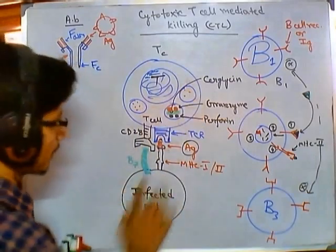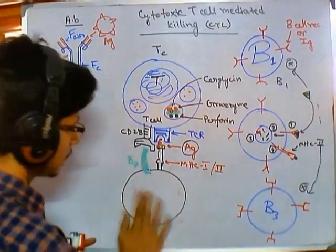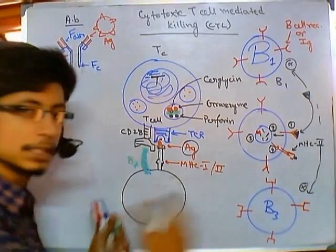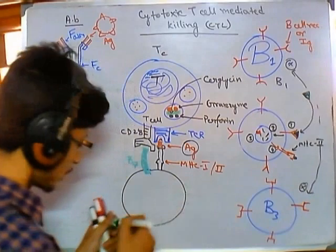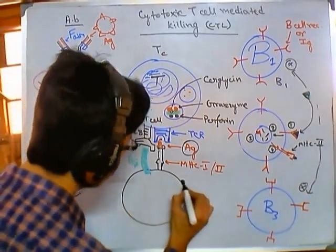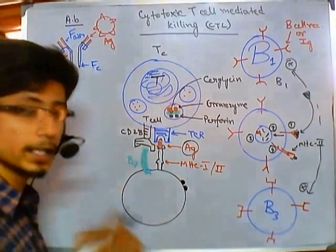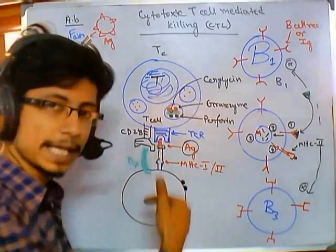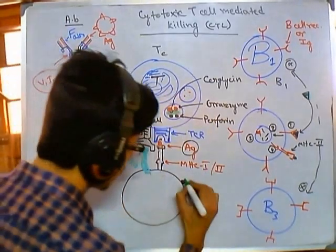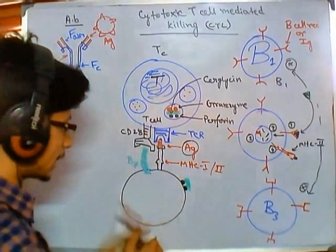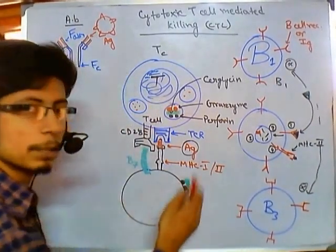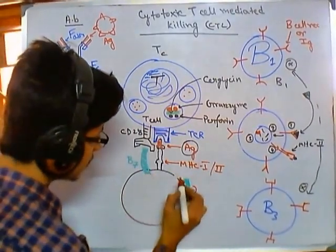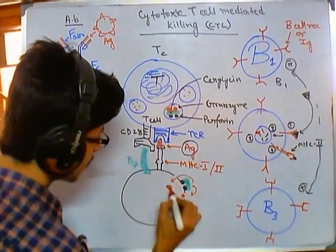Once released, the serglycine disassembles. The perforins bind to the infected cell membrane and create pores in it. Through these pores, the granzymes enter inside the infected cell.